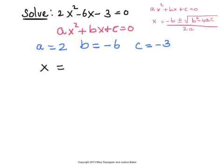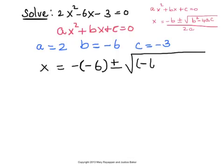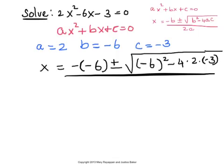x will be negative b. Negative b would be negative of negative 6 plus or minus square root of b squared is squaring negative 6 minus 4 times a is 2 times c is negative 3. All over 2a will be 2 times 2.